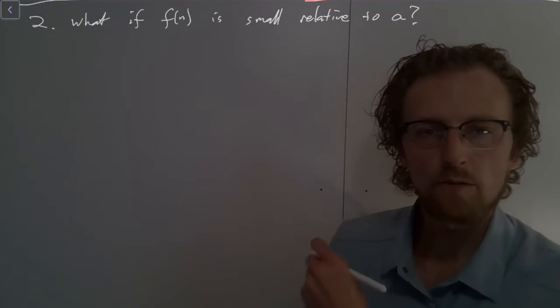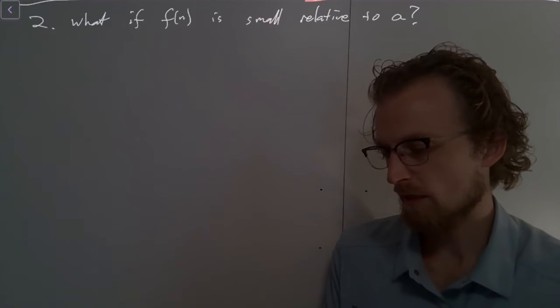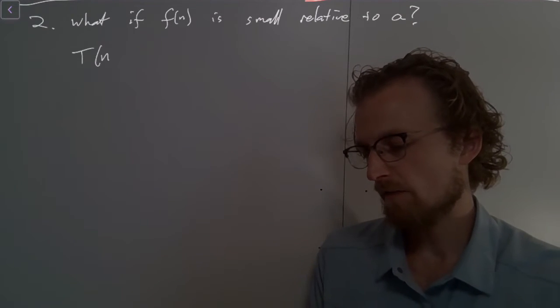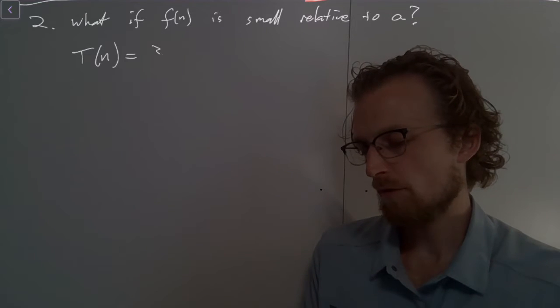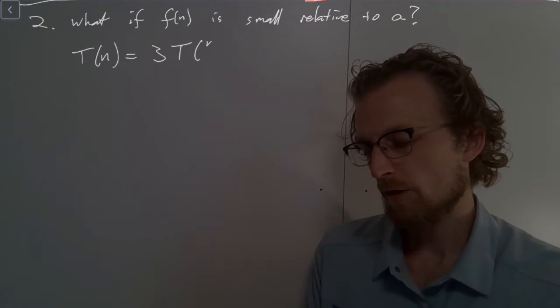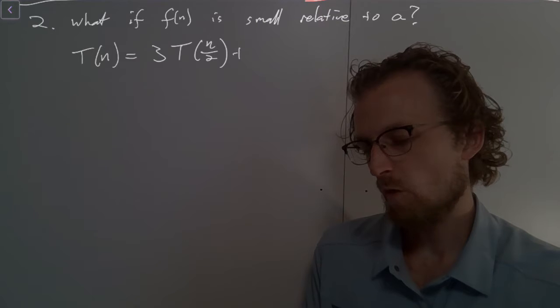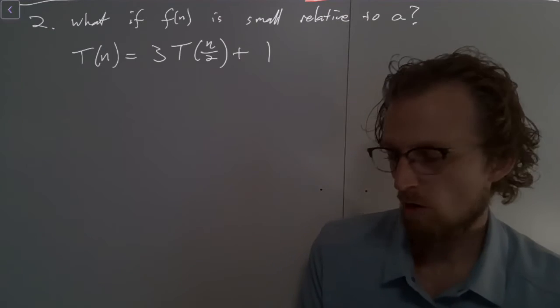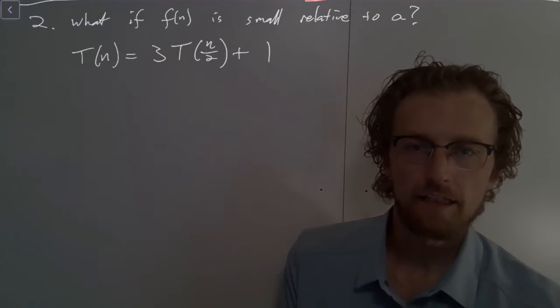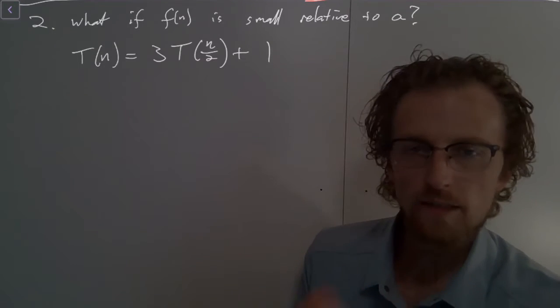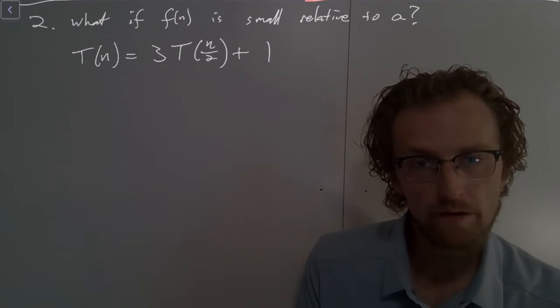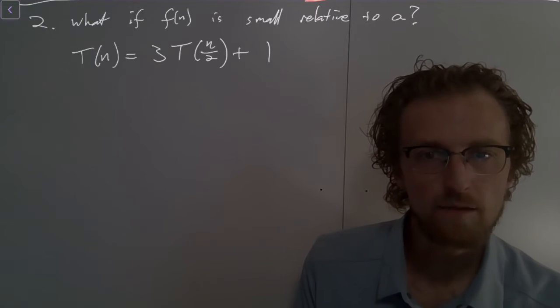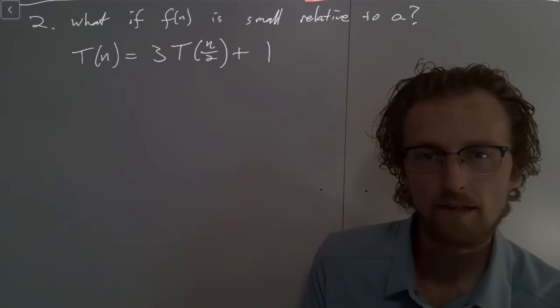Here's an example of a recurrence relation that actually captures this. What if T(n) equals 3T(n/2) plus 1? So our overhead now is tiny. Each time we recurse, we have constant time overhead, just like we did in binary search, just like we did in the max find. So we have very fast overhead.